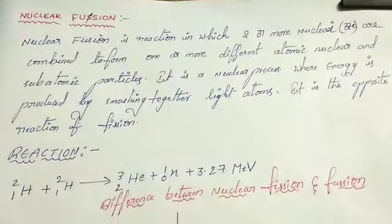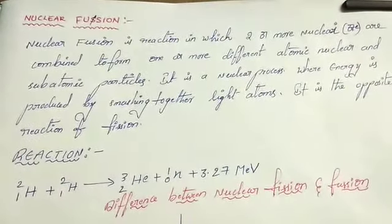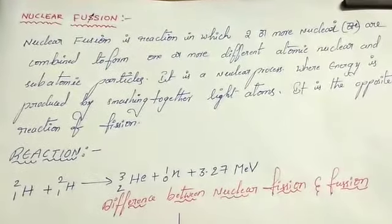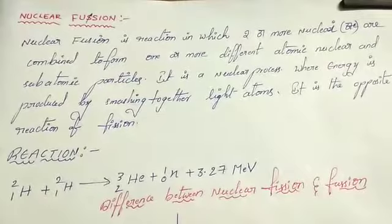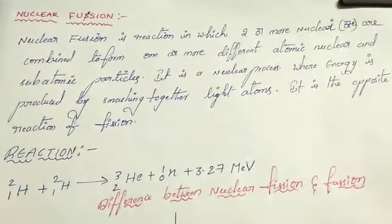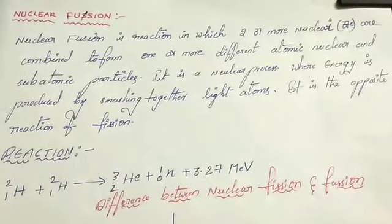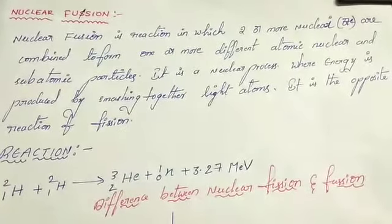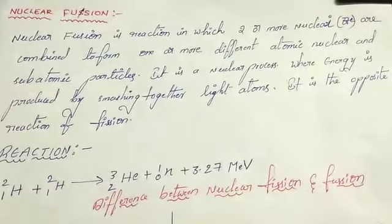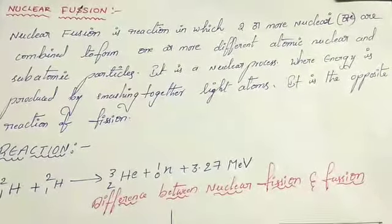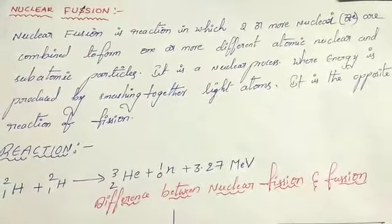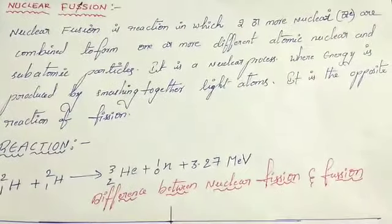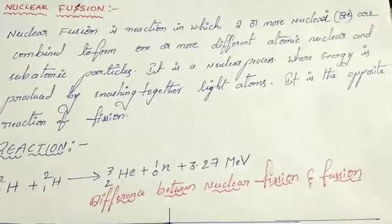See our next topic: nuclear fusion. Nuclear fusion is a reaction in which two or more nuclei are combined to form one or more different atomic nuclei and subatomic particles. It is a nuclear process where energy is produced by massing together light atoms. It is the opposite reaction of fission.